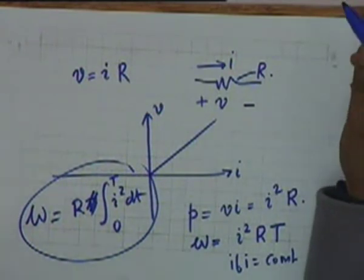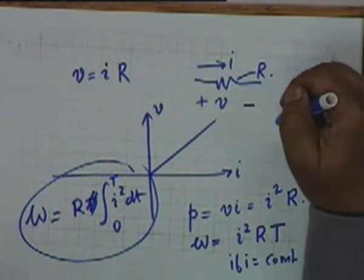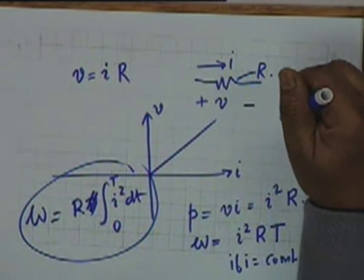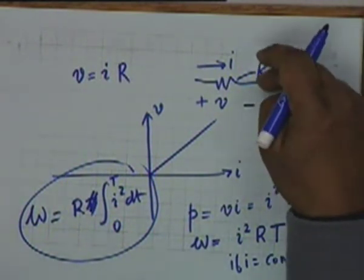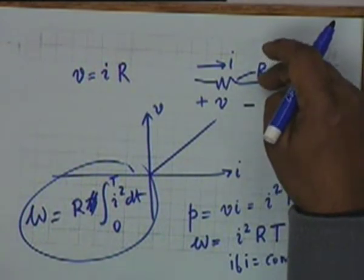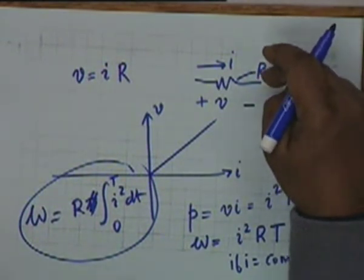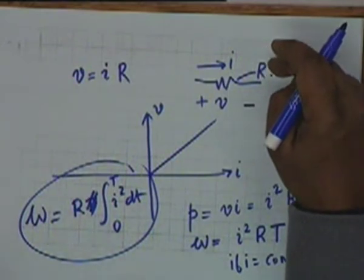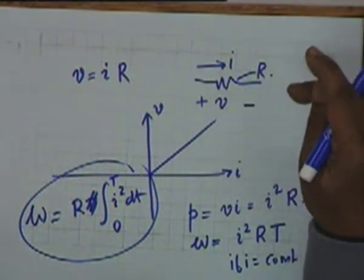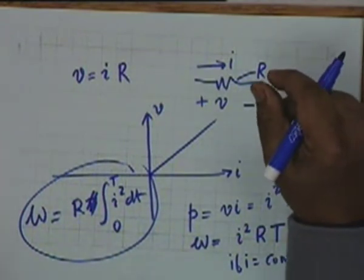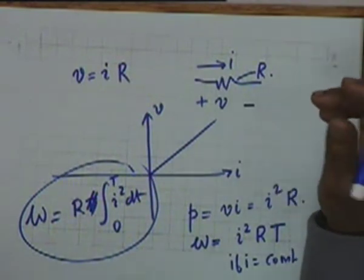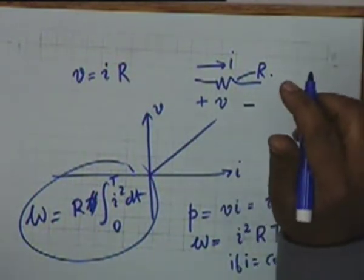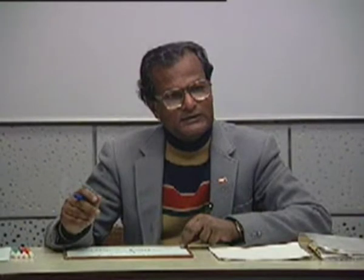This energy is dissipated in the resistor—dissipation means a transformation of electrical energy to heat energy. This is an irrecoverable, irreversible process. That is, if a resistance dissipates energy, this energy cannot be recovered. Therefore, in a resistance, the energy is dissipated and not stored.